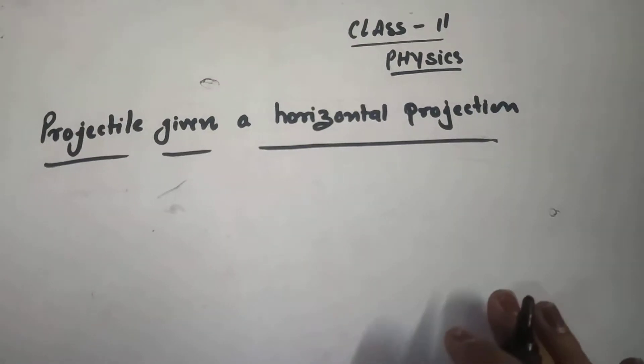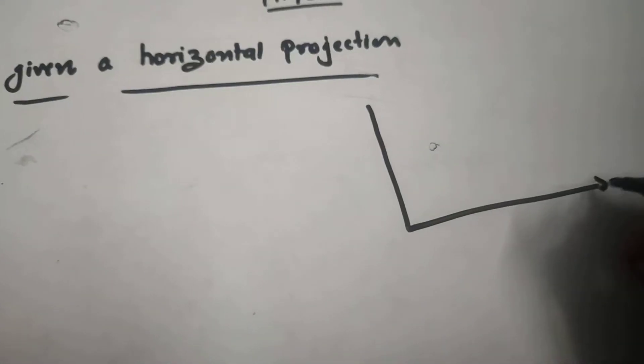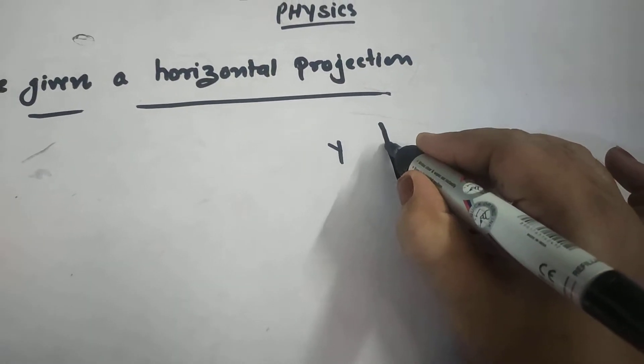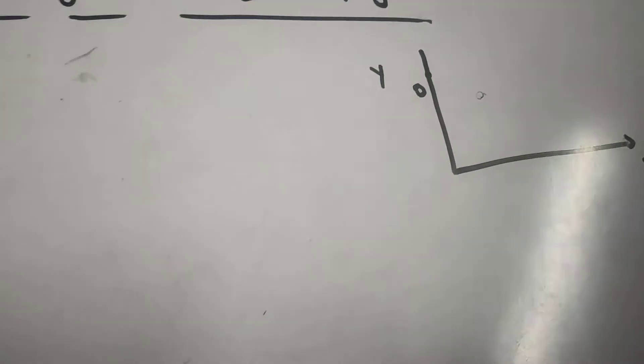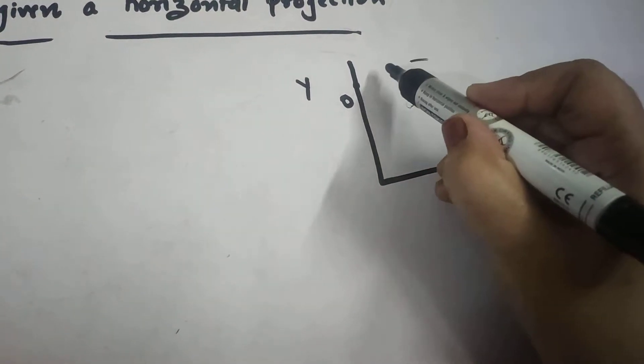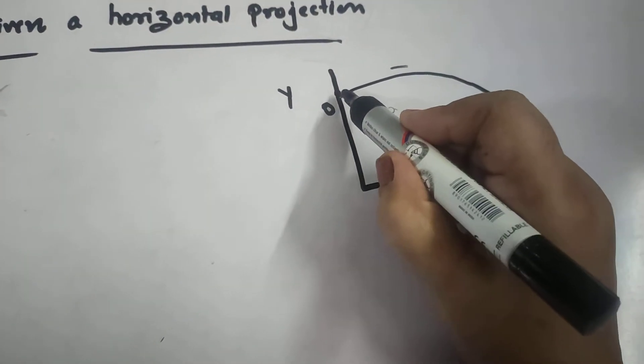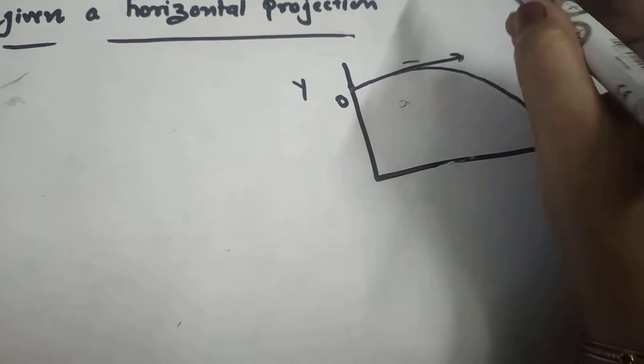Projectile given a horizontal projection. In this case, let us consider we are having two axes X and Y, and let O is the position from which the projectile is being projected. If it is projected from this, the projectile will go downward naturally along with the forward motion due to its horizontal velocity.